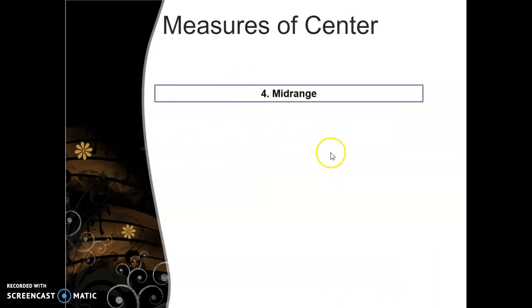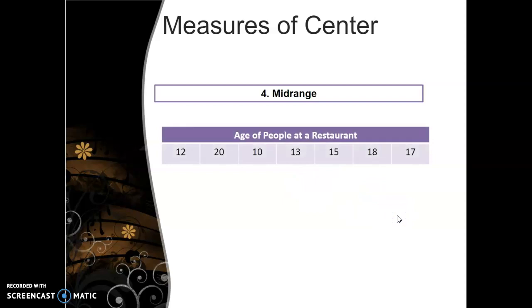Okay. Finally, let's talk about mid-range. If you're looking at ages of people at a restaurant and you want to find the mid-range, you're going to add the maximum value plus the minimum value and divide by 2. So in this case, it would be 20 is the maximum value plus 10 is the youngest divided by 2. So the mid-range of this data set is 15.